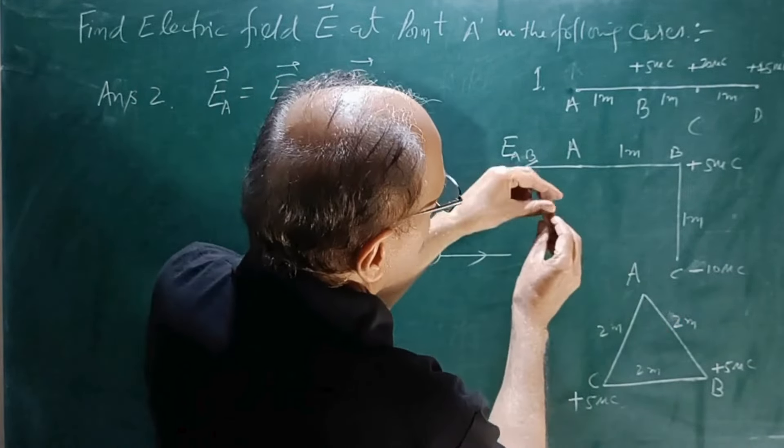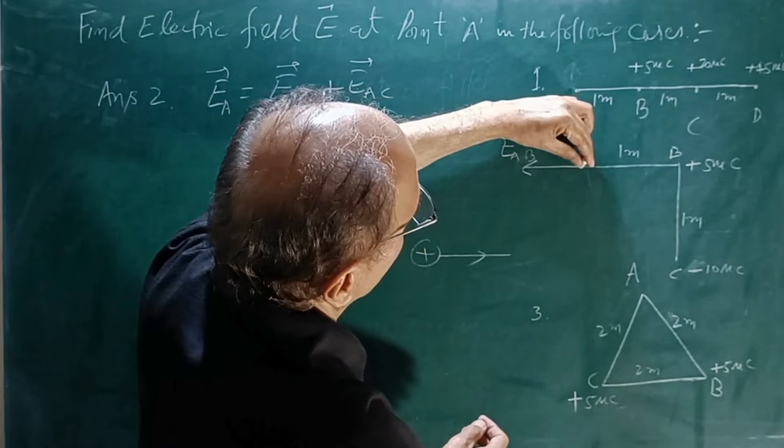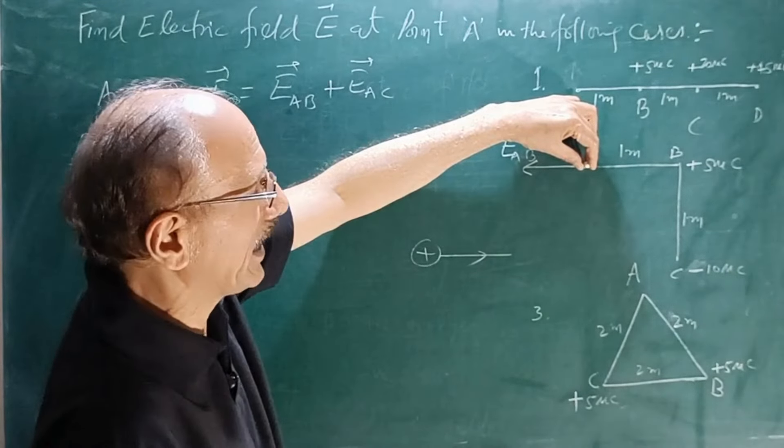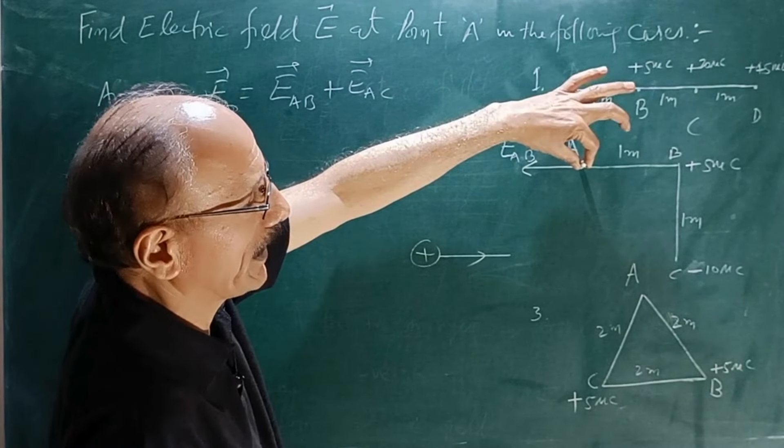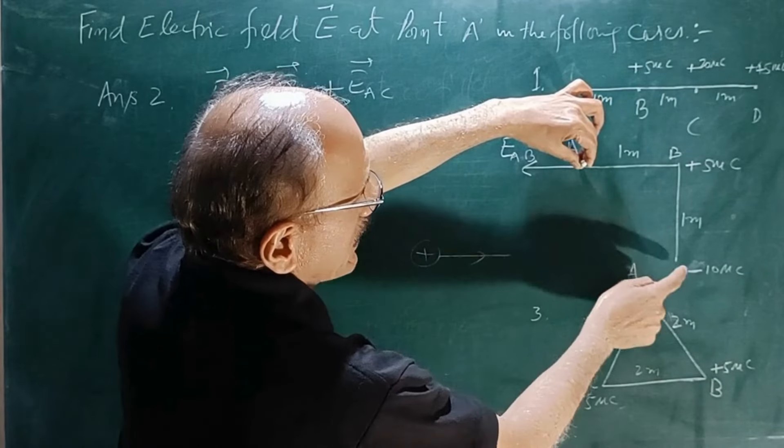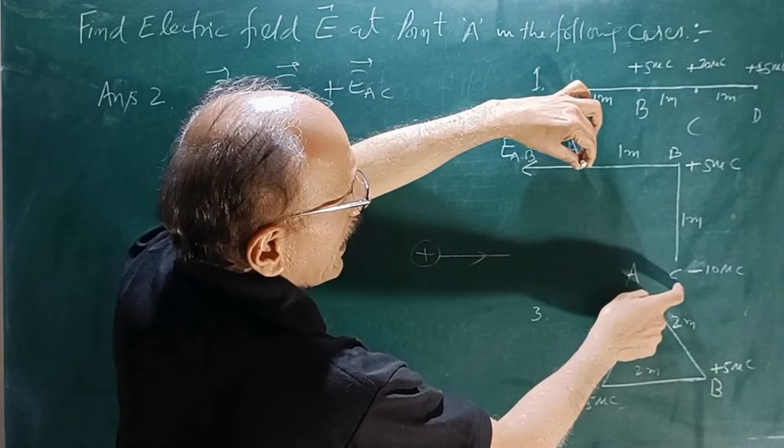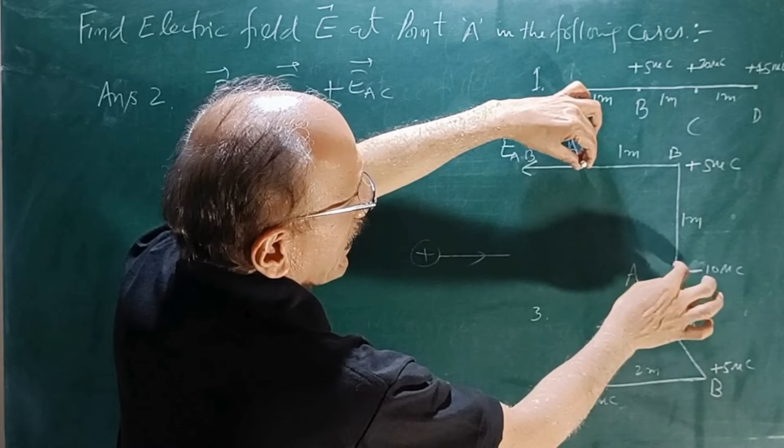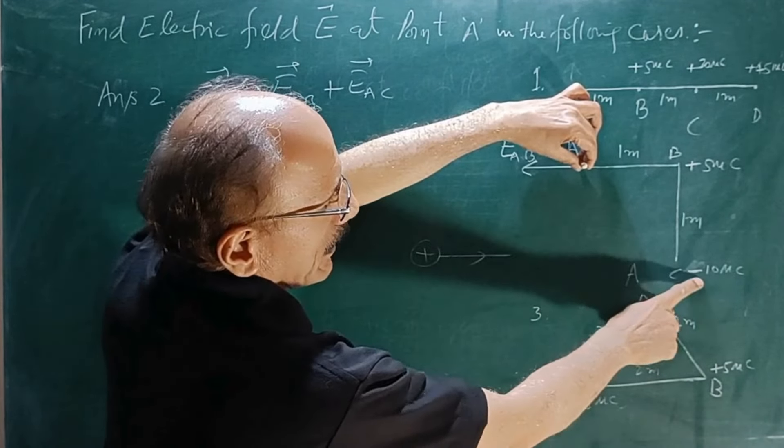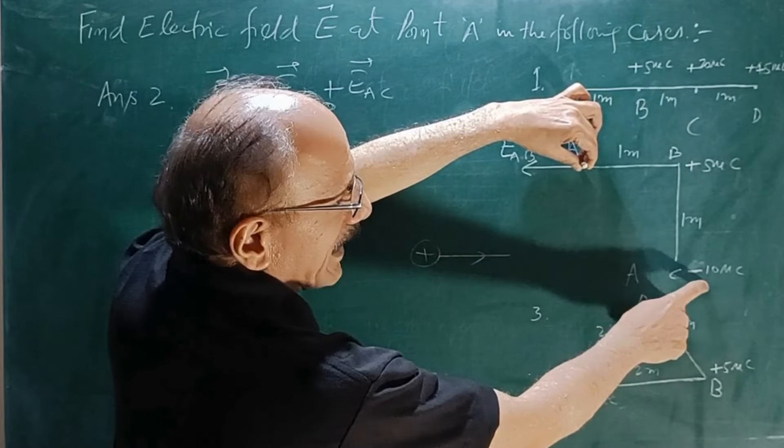Now C - again put the pen at A, at the position of A. From C charge, the electric lines of force will be inward or outward. What is the nature of the charge? It is negative.